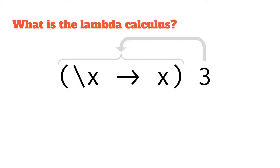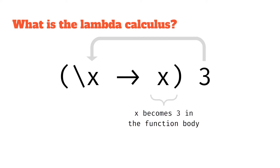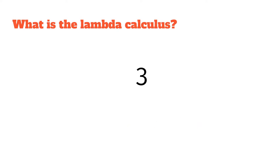So how do we do that? We do that through a process called beta reduction when we're trying to evaluate this expression. The three gets substituted in for x as an argument. We take everything on the right hand side of the arrow — the function body, which in this case is just x — and replace any x with the three. So we end up with just a three, which is what we'd expect from applying an identity function: we just get back what we passed in.